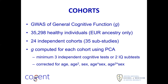Earlier this year, we published a study with 35,000 healthy individuals from 24 independent cohorts — actually 35 independent sub-studies. This is a very well-phenotyped cohort. In COGENT, we typically use subjects subjected to lengthy cognitive batteries with well-replicated and validated cognitive measures. We calculate general cognitive ability the old-fashioned way — using a principal components analysis of multiple independent domains of cognitive ability, generally requiring three independent cognitive tests corrected for age, sex, and their interaction.